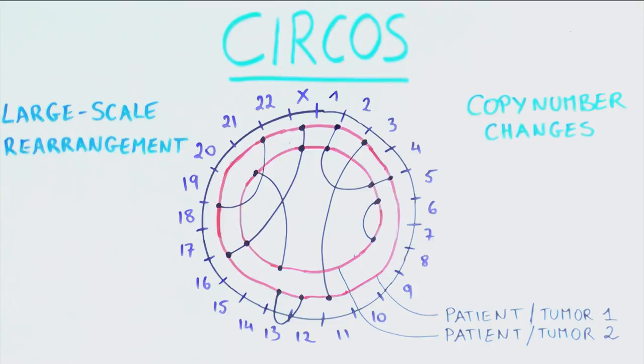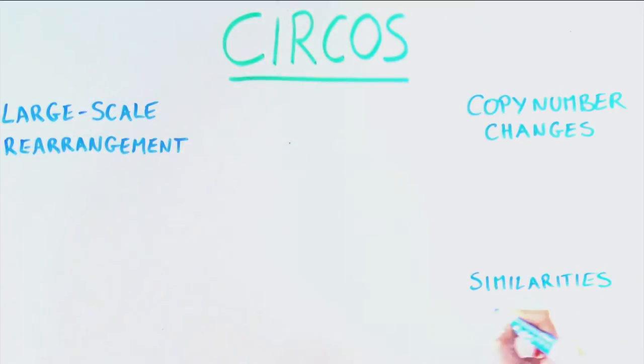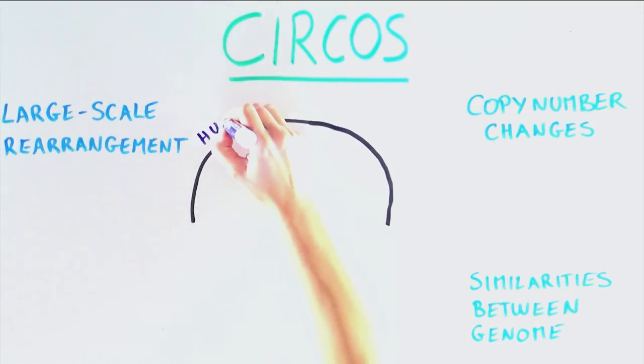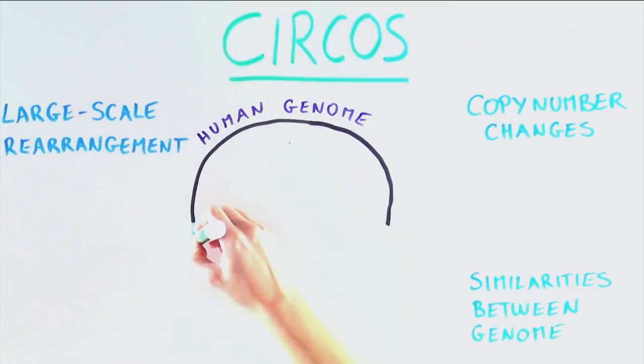Using CIRCOS, we can also study similarities between different genomes. For instance, if we were comparing the dog genome to the human genome, we would plot the entire human DNA sequence on the top half of the circle and one of the dog chromosomes on the bottom half.